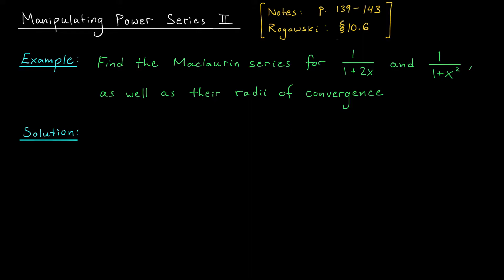Now differentiation and integration are super helpful, but they're not the only shortcuts we know of. Back in our Taylor polynomials unit, we often started with a polynomial for one function, and then used a substitution to obtain a polynomial for a related function. We can do the same sort of thing with Taylor and Maclaurin series, but we have to be careful. Substitutions can sometimes affect not only the interval of convergence, but also the radius of convergence.